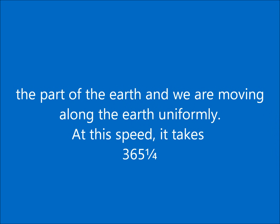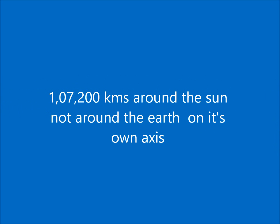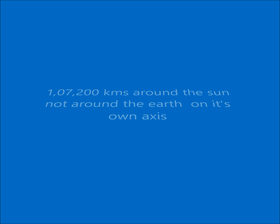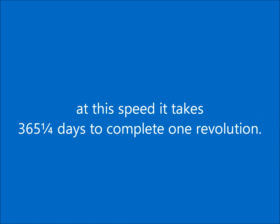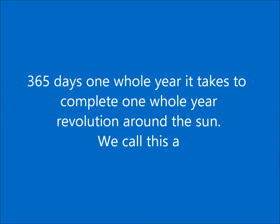It takes 365 and one-quarter days to complete one revolution. So you can imagine how long a distance it travels — even at that enormous speed, it takes one whole year to complete one full revolution around the sun. We call this a year.